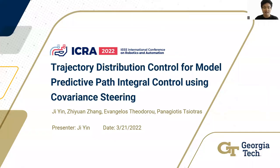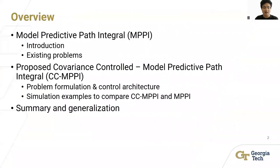Hello, everyone. Today, I'm going to present the paper, Trajectory Distribution Control for Model Predictive Path Integral Control using Covariance Theory. First, I'll briefly introduce the Model Predictive Path Integral, or MPPI, and the existing problem with this controller. Then, I will talk about the proposed covariance control Model Predictive Path Integral, or CCMPPI, and how it improves upon the MPPI controller.